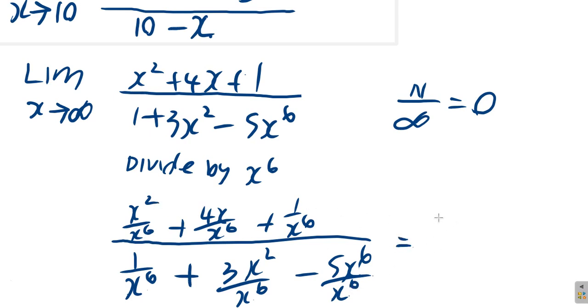x squared over x to the 6 is 1 over x to the 4, right? Plus 4x over x to the 6 would be 4 over x to the 5 plus 1 over x to the 6, all divided by...